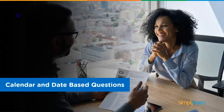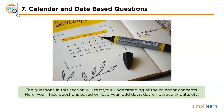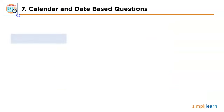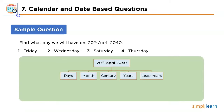Moving forward, we'll discuss the section of calendar and date-based questions. The questions here will test your understanding of calendar concepts, such as leap year, or finding the day on a particular date. The problem asks: what day will it be on 20th April 2040? We can figure out the answer within 30 seconds using an interesting trick that breaks the given data into five sections: days, months, century, ordinary year, and leap year, by computing odd days.